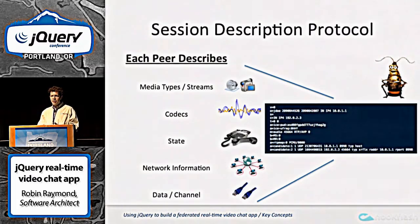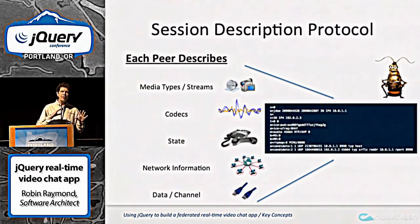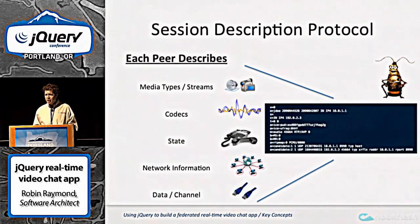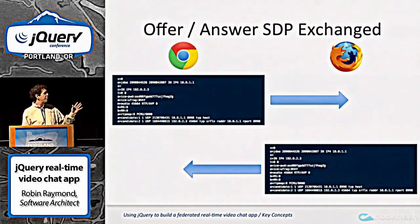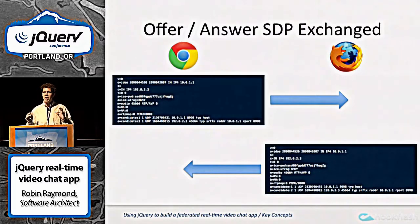In WebRTC, each peer is required to describe all of their capabilities, and they package it all up into something called SDP. It's a really ugly, horrifically bad format, but you can just treat it as a blob data type. It comes from the legacy days of telephony. What you have to do is browser A sends what they want to browser B — that's called the offer — and then browser B sends what they want back to browser A — that's called the answer. This is the offer-answer SDP exchange.